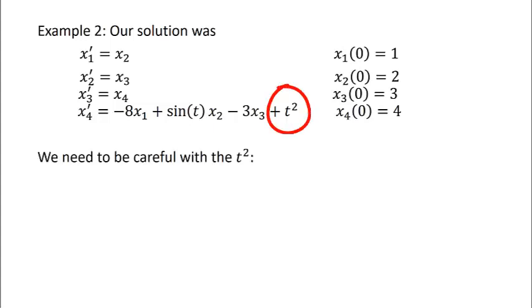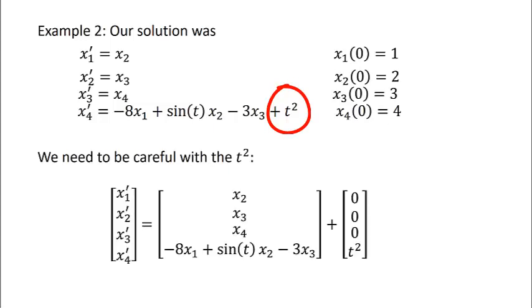So we need to be a little bit careful with that t squared this time. So we start by writing our derivatives on the left as a single vector. And then on the right, the first step is just to pull apart everything that has an x and then plus a vector containing that t information. So a 0, 0, 0, t squared.